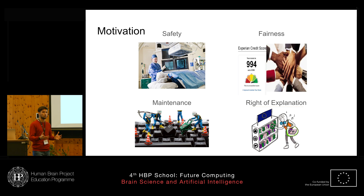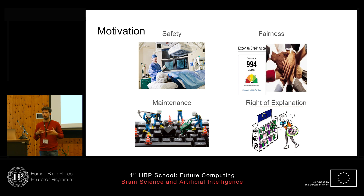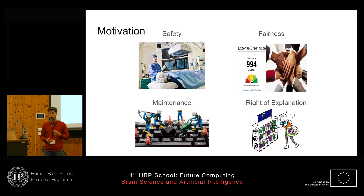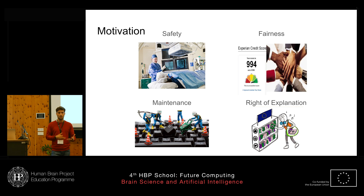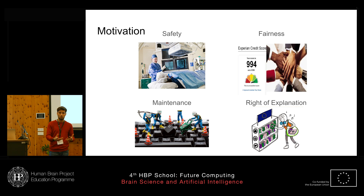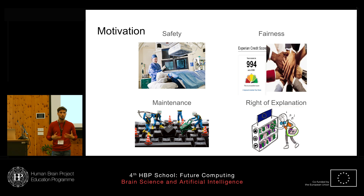To convince you why we actually need interpretability: there are a lot of machine learning applications becoming part of our lives and automating our decisions. We want to be absolutely sure that these decisions follow the same social norms as a real human would. We want them to be safe, fair, and maintainable. And most of all, the EU has now given people the right of explanation, so we need to make these applications interpretable.